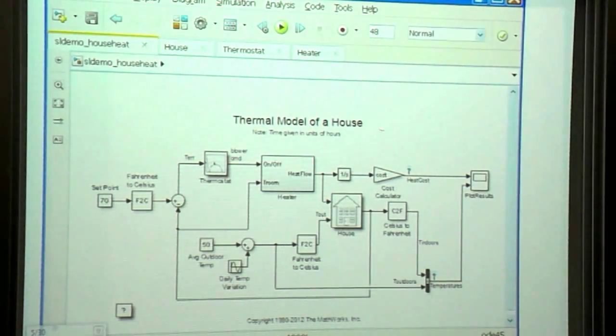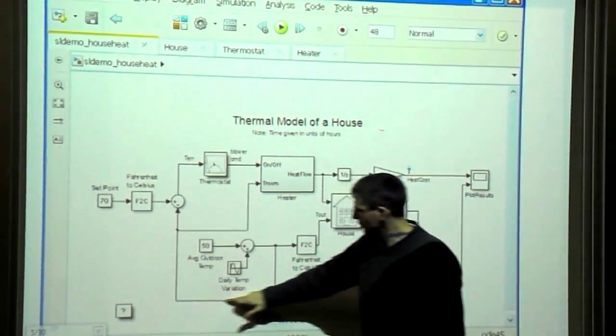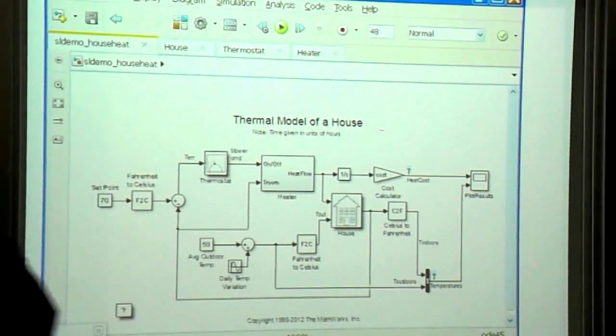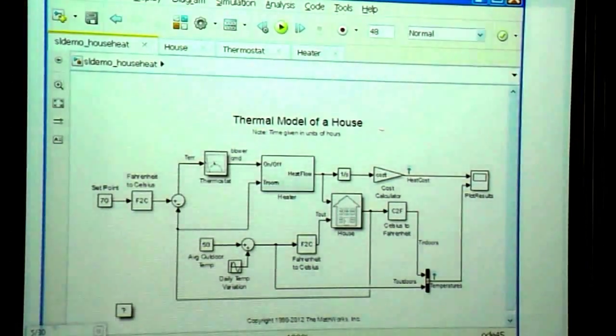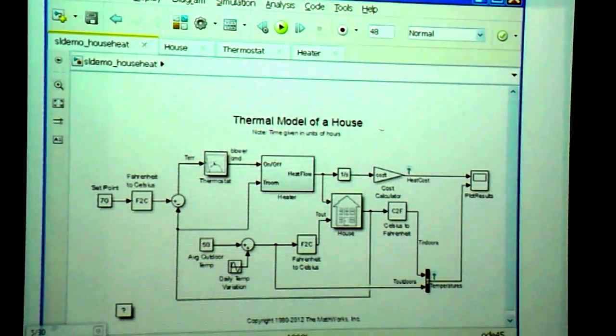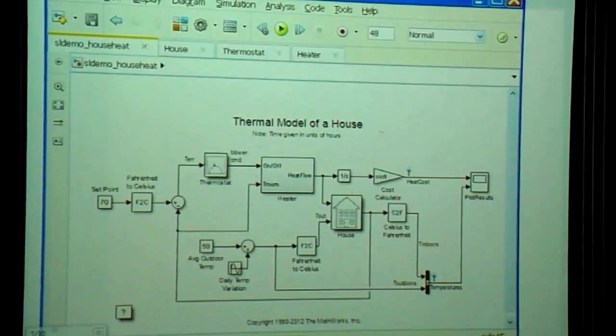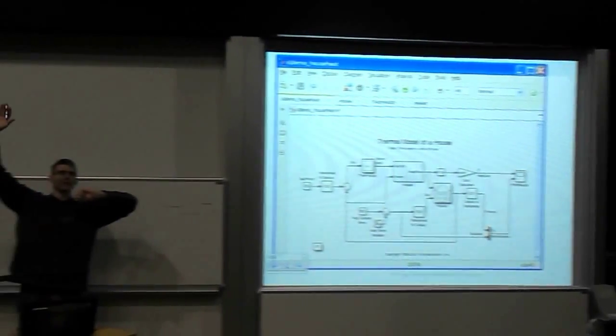If you want to model a thermodynamics requirement for a house, what do you need? Outside temperature. Here is the outside temperature. It's modeled as a sinusoid, which is not a bad model. How many of you have finished lab three? How many of you have found that the temperature profile actually was a sinusoid?